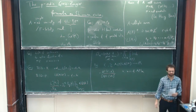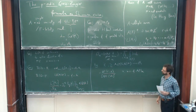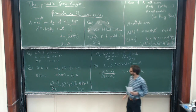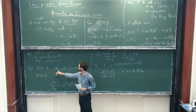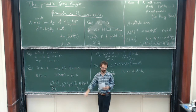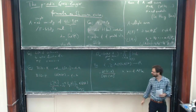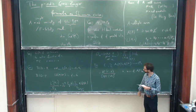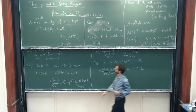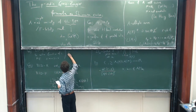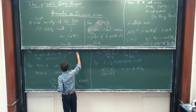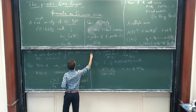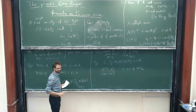The case I'm going to be interested in is the rank one case — when the order of vanishing is one. In that case we expect the rank of A to be one, and we would like to construct a point. I should say that this conjecture follows from modularity, and that's basically the only known way of proving the conjecture.